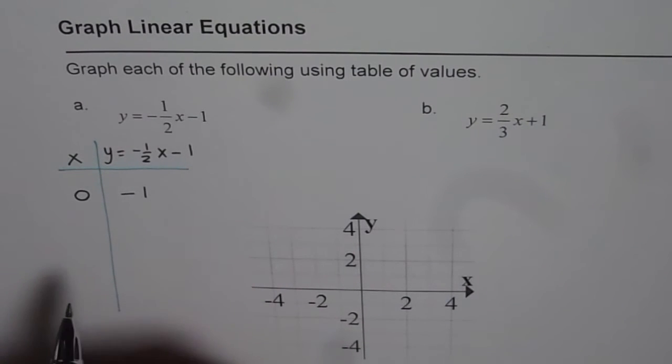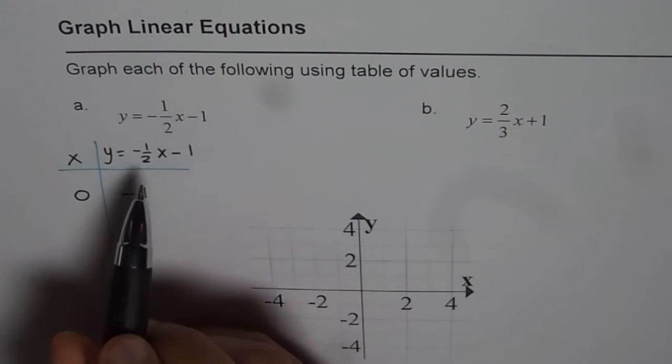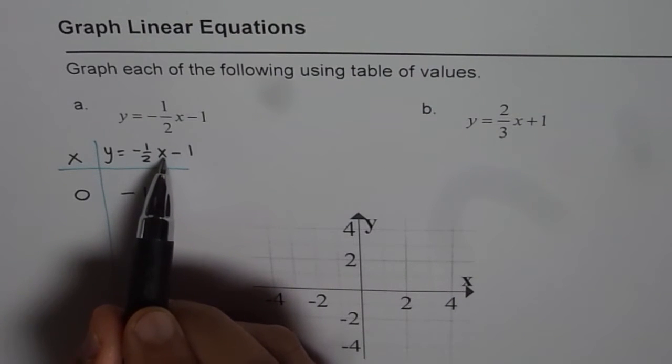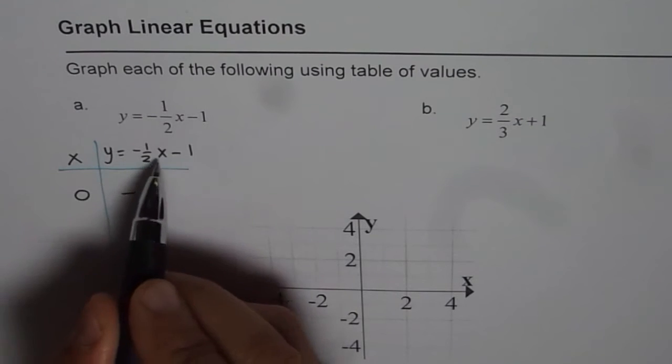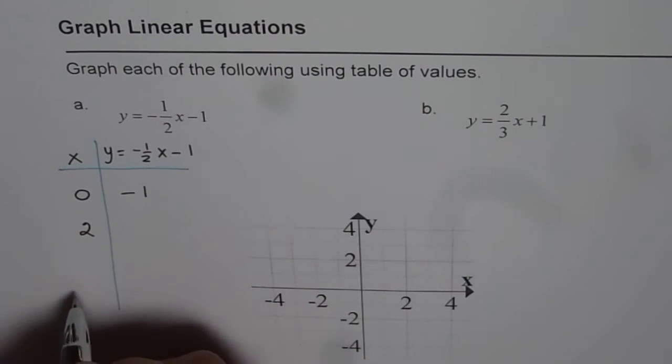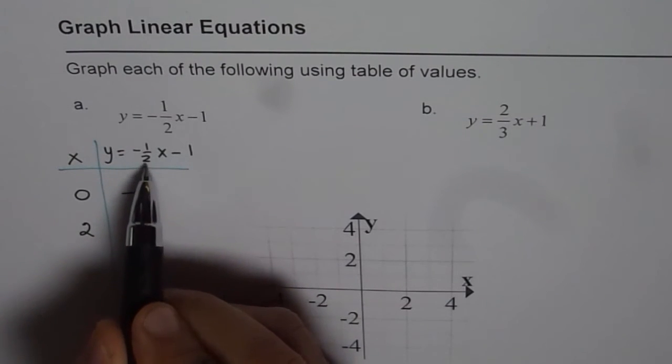Now, avoid fractions. That's the whole idea. Other value for x could be 2. So, if I take 2 as my x value, in that case, half of 2 is 1.